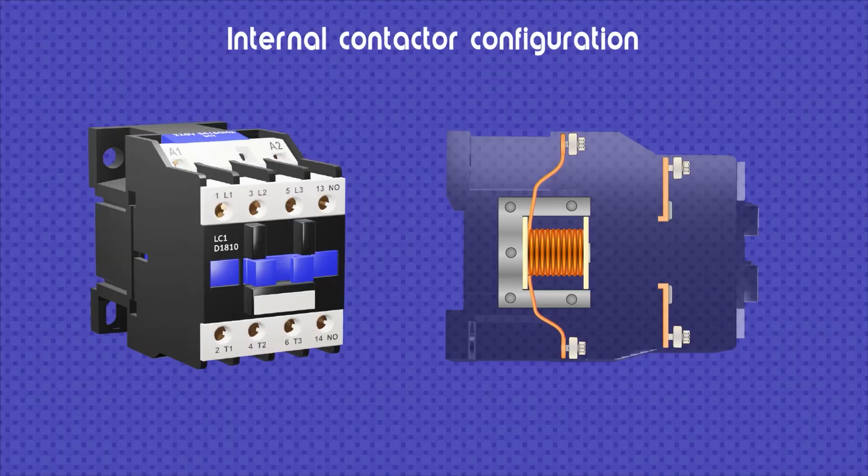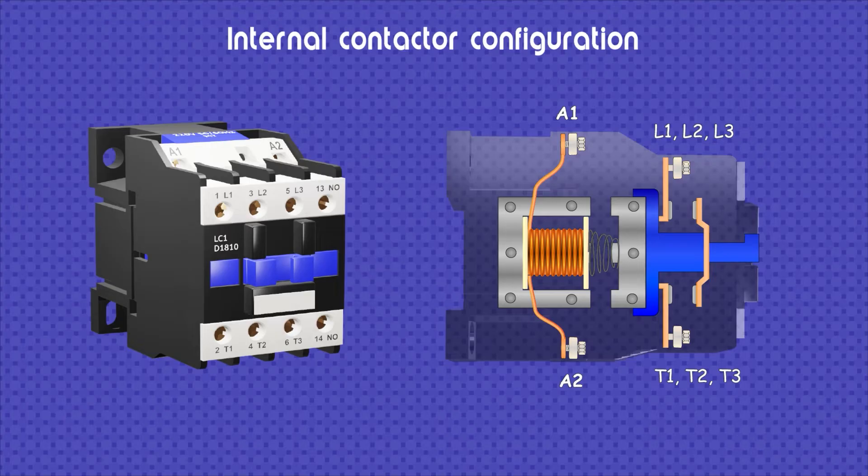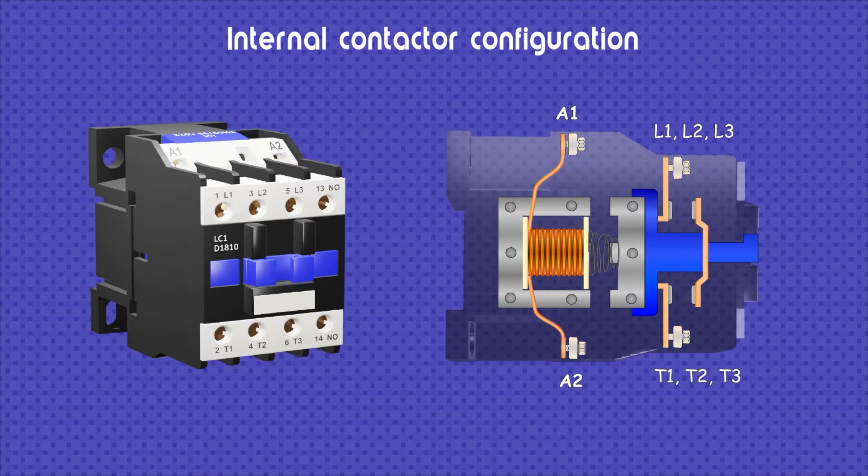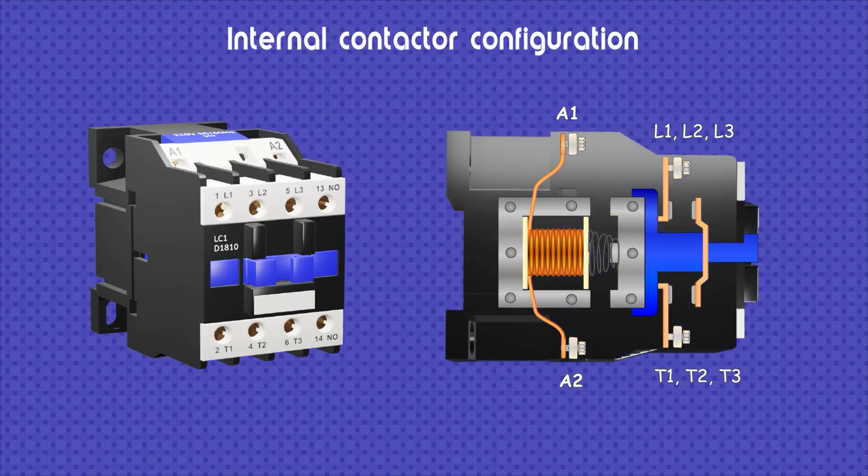Here is an animation of what happens inside the contactor. When the coil is energized, it generates an electromagnetic field that attracts the moving part of the contactor. In this way, the main and auxiliary contacts close and allow current to pass to the load. If the coil is de-energized, then the spring located between the moving part and the coil pushes the moving part to its default place.